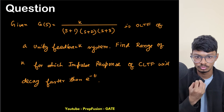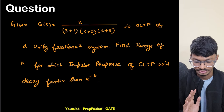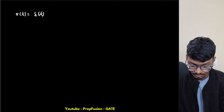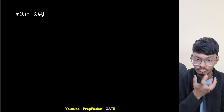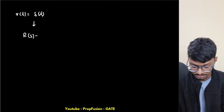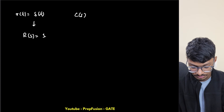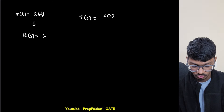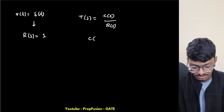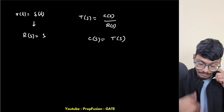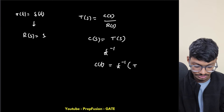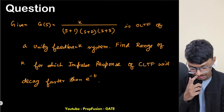At first I thought this might be a root locus problem, but no — this can be simply solved with the Routh-Hurwitz criterion. First, what is impulse response? Impulse response means my input r(t) is an impulse signal. If the input is an impulse, then in the Laplace domain R(s) = 1, hence my response C(s) will simply be the transfer function itself. So the inverse Laplace of the closed loop transfer function gives c(t).